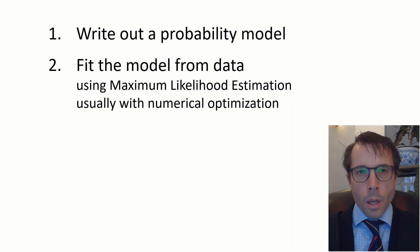As I've mentioned in earlier videos, the two fundamental steps of machine learning are: first, write out a probability model; next, fit it using maximum likelihood estimation. To do this, we need to be able to find a formula for the likelihood from the probability model that we've written down.